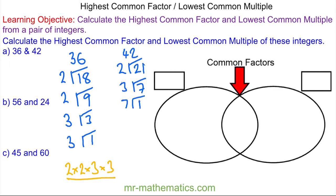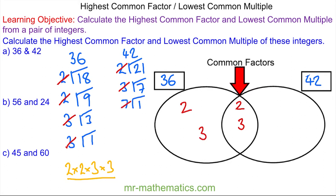To use these prime factors to work out the highest common factor, we arrange them in a Venn diagram where one circle has 36 and the other has 42. The twos are common so they go in the overlap, and the threes are also common so these also overlap. In 36 we have another 2 and another 3, so they go in 36's section, and in 42 we have a 7. The highest common factor is found from the numbers in the overlap, which is 2 times 3, so the highest common factor is 6.